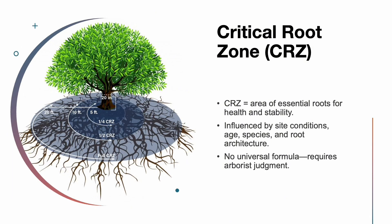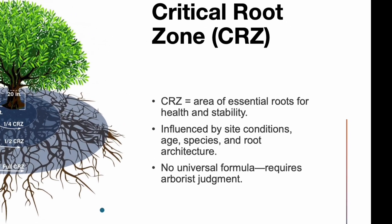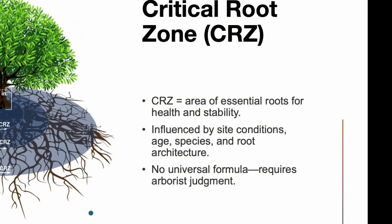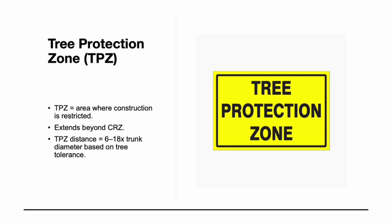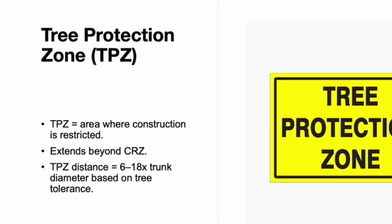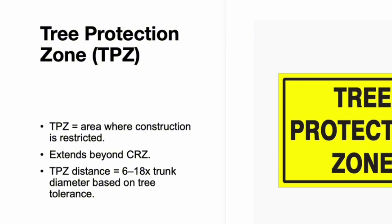The critical root zone is the minimum root area required for tree survival. It's not always circular and depends on site conditions and species. Arborists must use biology and observation, not just formulas, to determine the zone. The tree protection zone goes beyond the critical root zone to safeguard soil and canopy. It's usually set 6 to 18 times the trunk diameter, depending on species and site. The larger the zone, the better the protection if space allows. Space is limited on most sites, so arborists must negotiate for tree-friendly solutions like tunneling instead of trenching. Understanding site plans and offering alternatives helps ensure tree survival and project success.